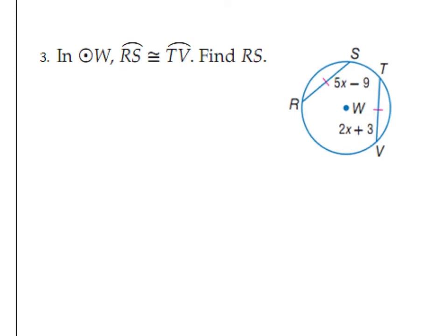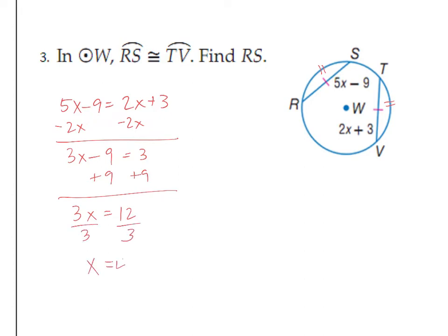Go ahead and pause the video and try number 3. In circle W, arc RS is congruent to arc TV. Find RS. Well, we can see because these are congruent that the segments are also congruent. So 5X minus 9 equals 2X plus 3. Solve it using regular algebra skills.